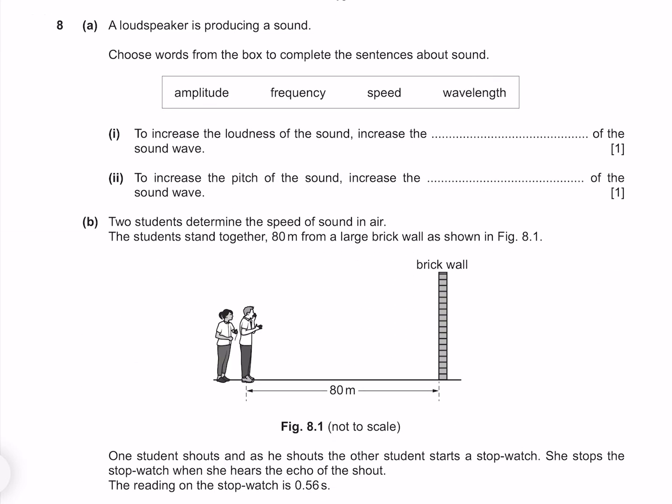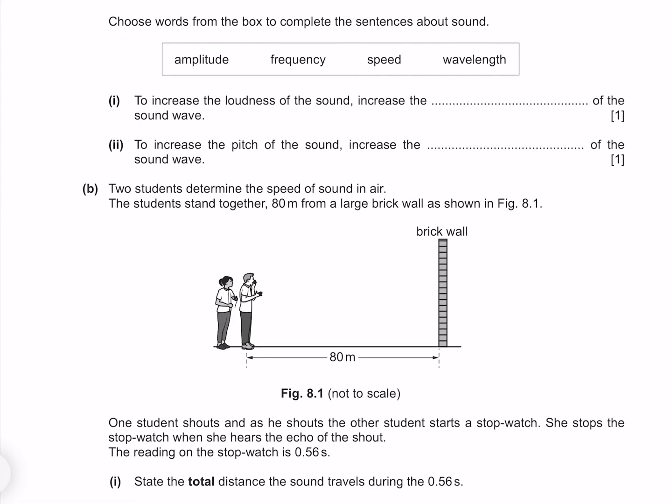A loudspeaker is producing a sound. Choose words from the box to complete the sentences about sound. To increase the loudness of the sound, increase the blank of the sound wave. Loudness is described by amplitude. To increase the pitch of the sound, increase the blank of the sound wave. Pitch is described by the frequency.